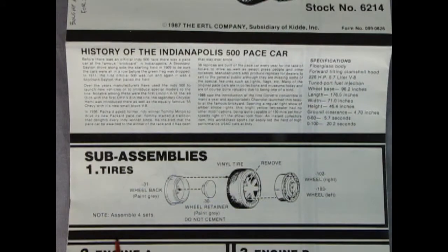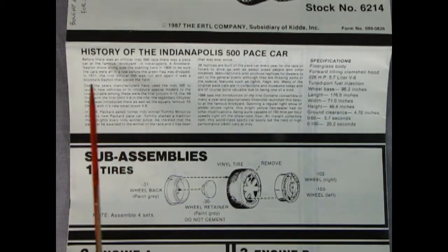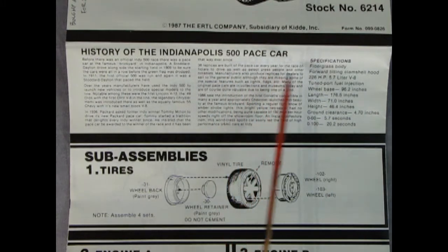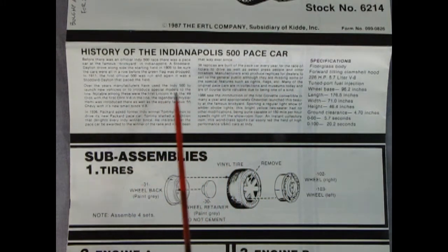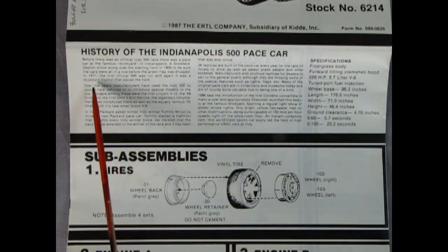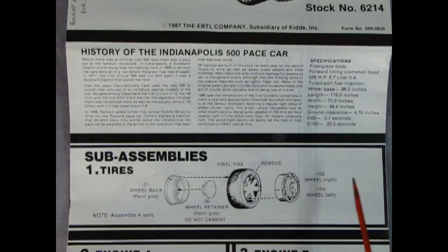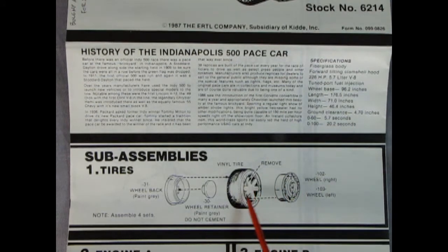These instructions fold out into a larger map. As we open up the instructions, we get a nice history of the Indianapolis 500 pace car - the original pace car was in 1911 and all kinds of stuff. Really cool. Then we start right away with our wheels. It doesn't show the custom wheel going in here but it does show the stock one and our tires. You remove the wheel retainer and the wheel bag, and it even tells you this time what color to paint.